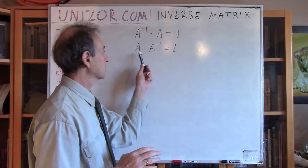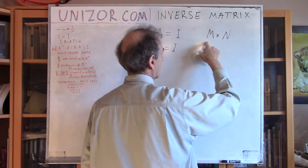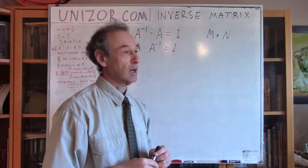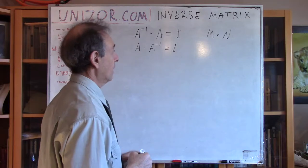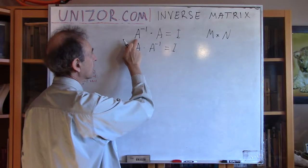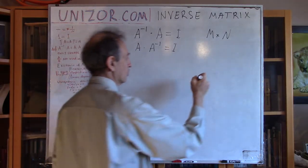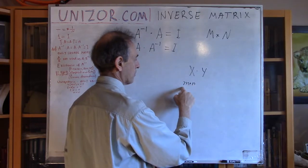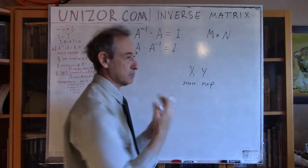Let me speak about the dimension of the matrices. Can matrix A which has m rows and n columns, where m is not equal to n — so it's not a square matrix — can this matrix be invertible? If we multiply the inverse matrix by A, the number of columns in the inverse must match the number of rows in A. If A has dimension m by n, the inverse should have n rows. So the inverse matrix must have dimension n by m.